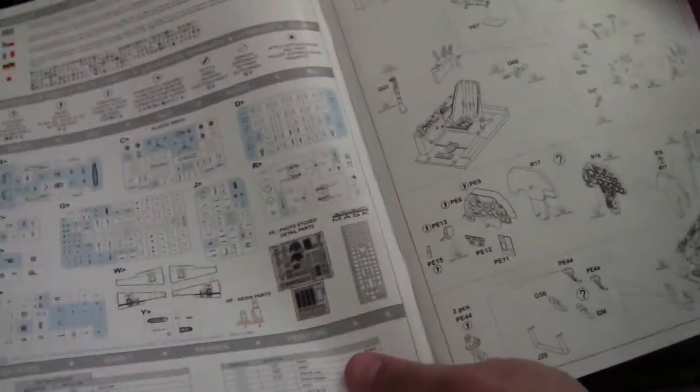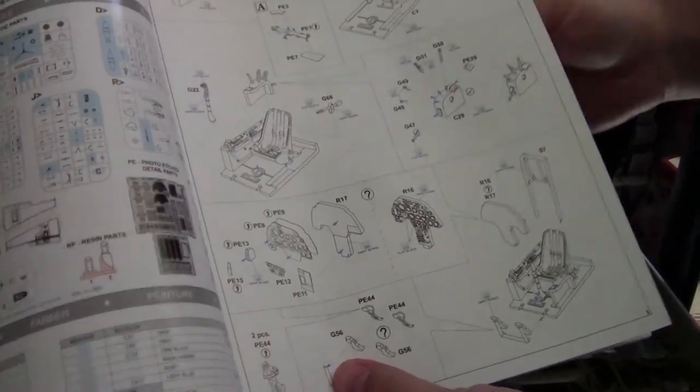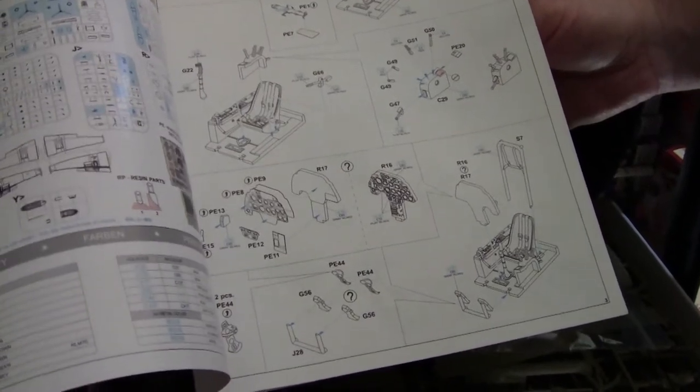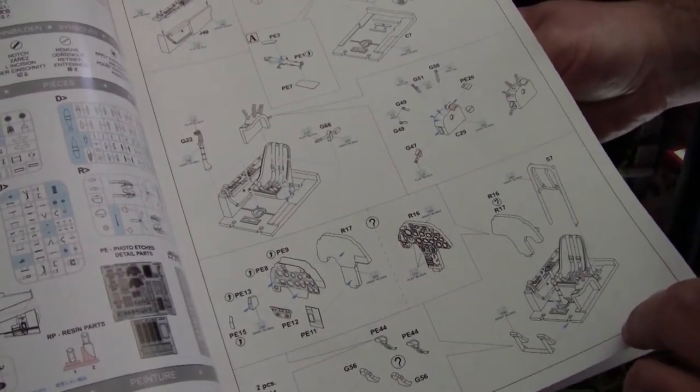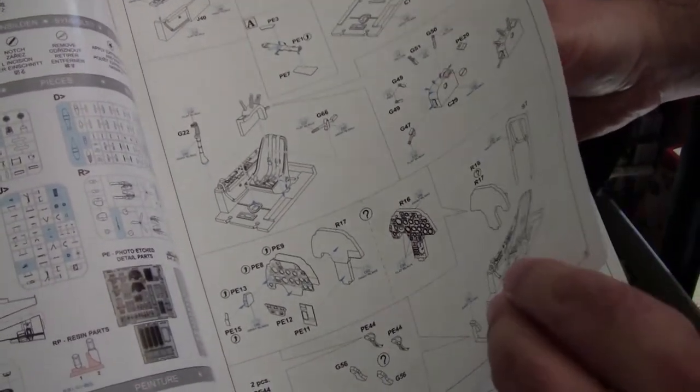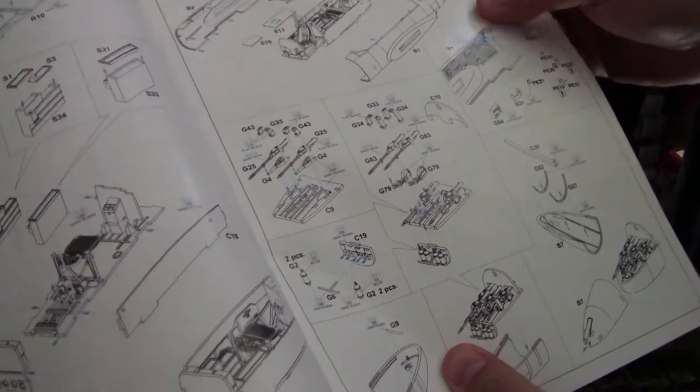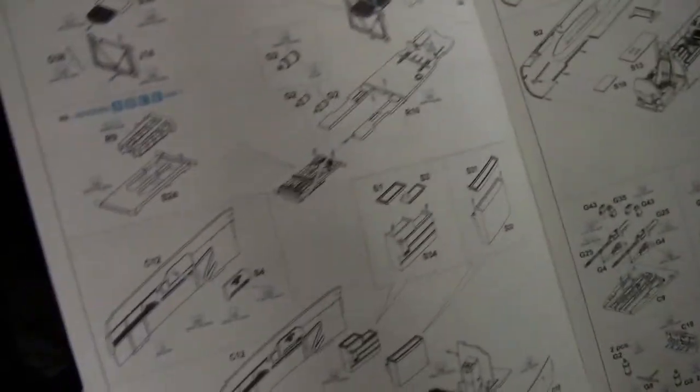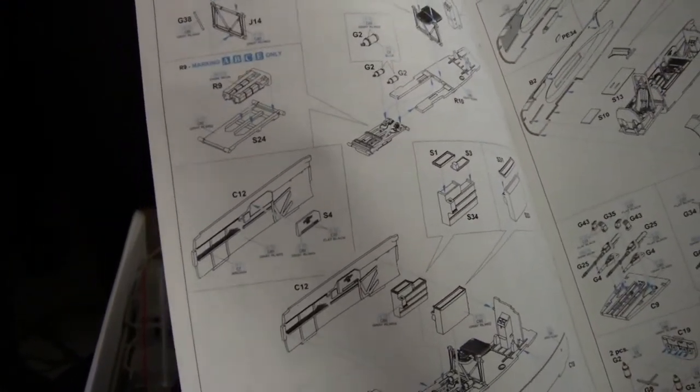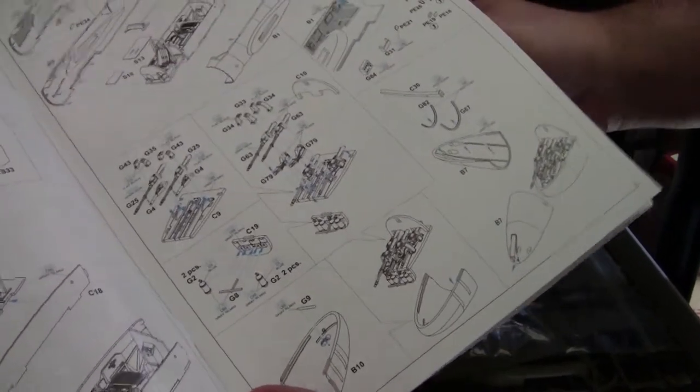Moving on to our instruction sheet. The kit is a different complex build. This is the one downside of Eduard's ProfiPACK kits. Is that they are definitely not for the novice modeler. There's just a lot you gotta do. And if you're not careful, you can easily goof up and miss a step or put the wrong part on. Because this kit has a lot of different options. Such as, you can see here, which they do thankfully label pretty easily. So you can tell which parts you need for which. But it's still something that could easily be missed.